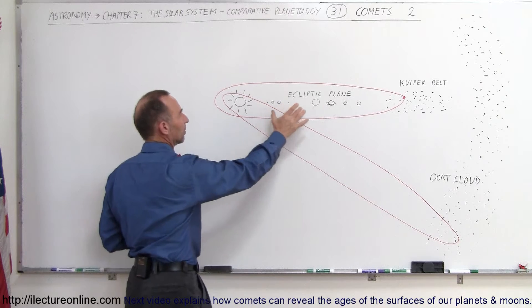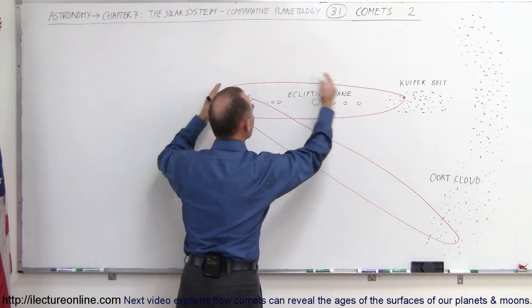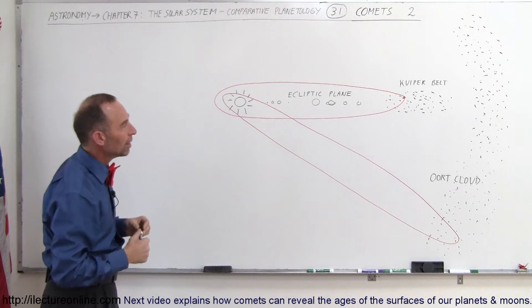We have the four terrestrial planets, the four gas planets, so this is the solar system most everybody knows and is familiar with.